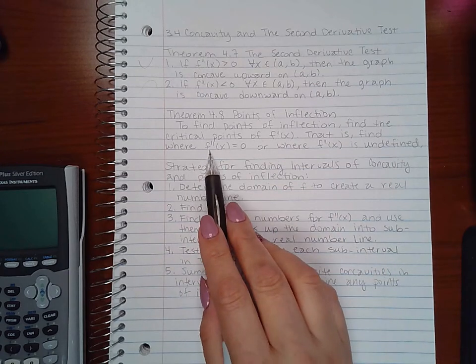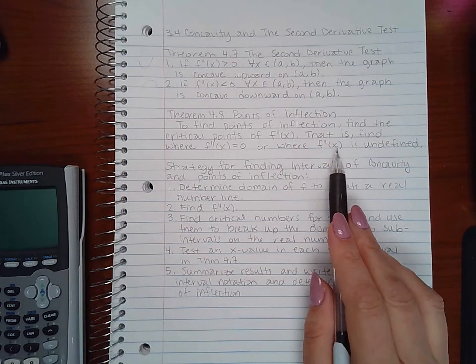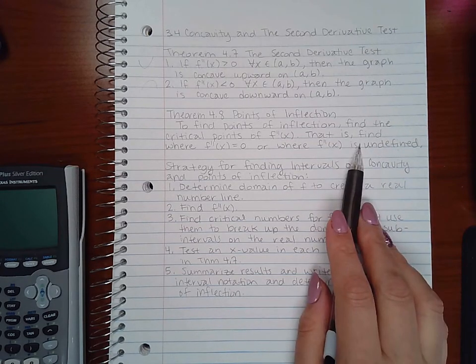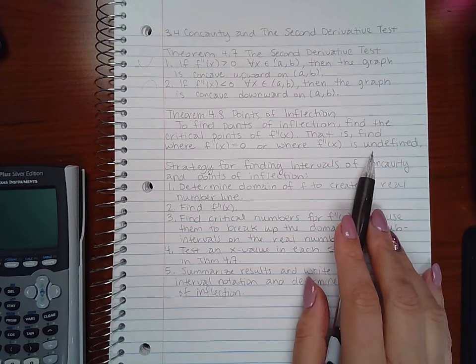So now we're going to be setting the second derivative equal to 0 or finding where the second derivative is undefined. But still, in order for it to be a critical point, it has to be in the domain of the original function.